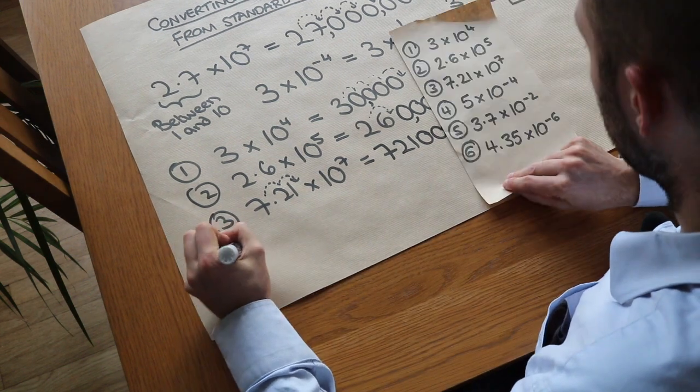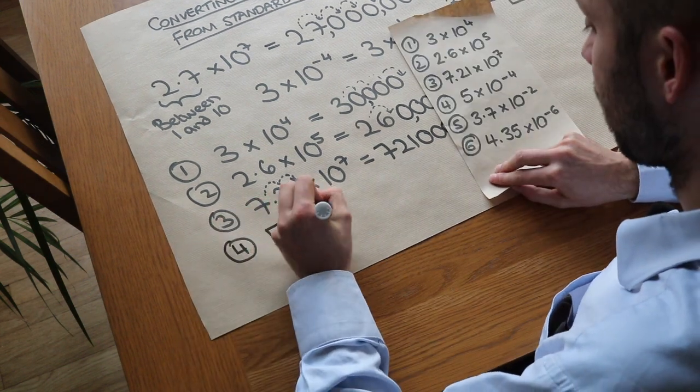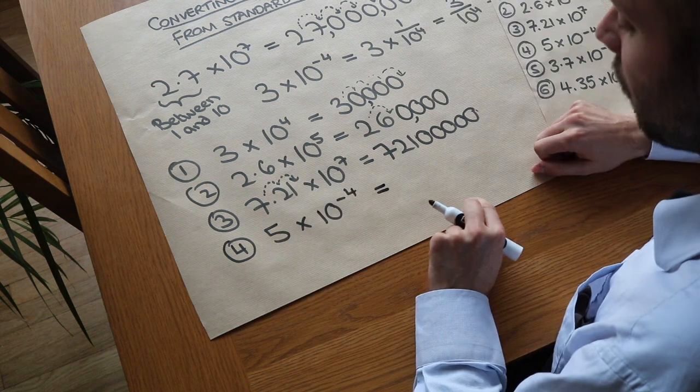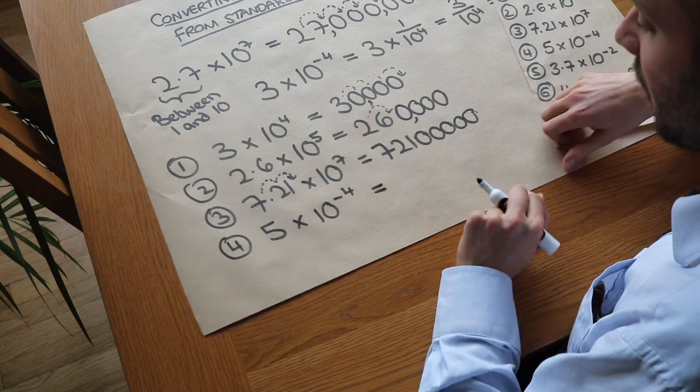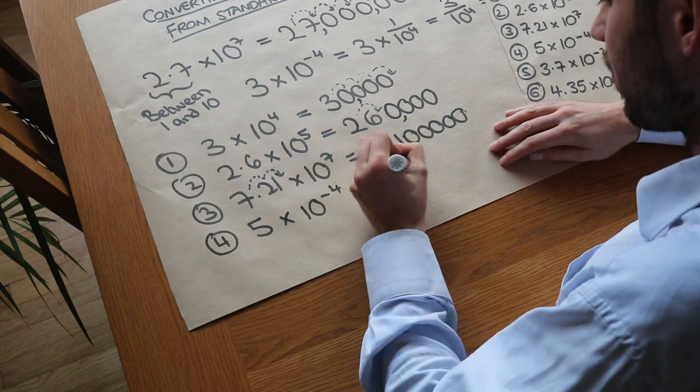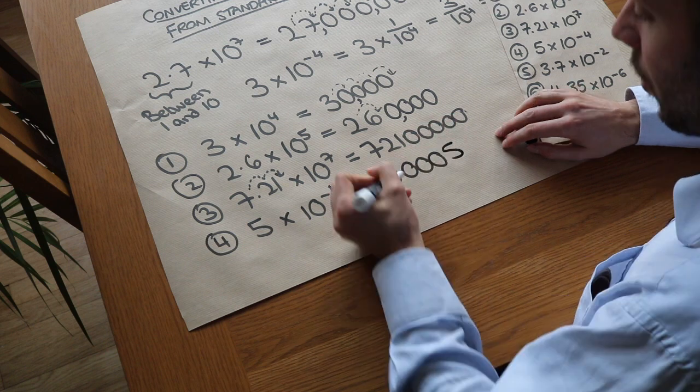Now what about these ones when we have negative powers? 5 times 10 to the power of minus 4. Now remember if you use my little trick, the 4 there tells you how many zeros are going to be on the front.